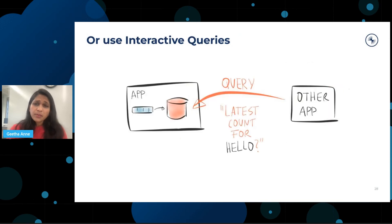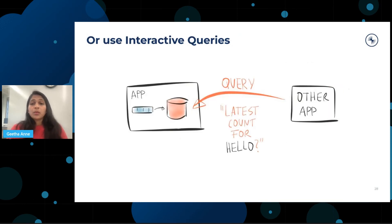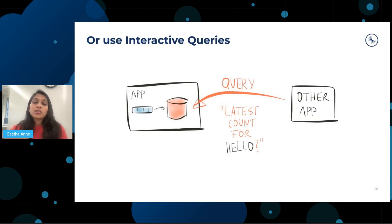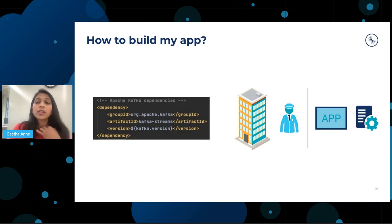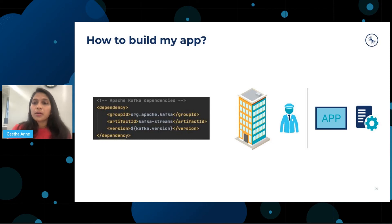One more use case is interactive queries. Interactive queries is a feature of Kafka Streams that lets you directly access the latest processing results from other applications. This means you no longer have to operate an interface with external databases running next to your application — these are all embedded and you can query them interactively. This section shows how artifacts like Maven repositories and other libraries are involved, and companies are doing this right now.